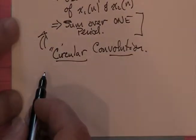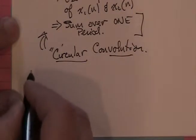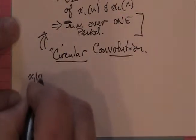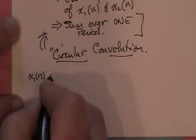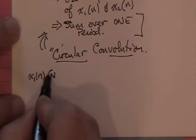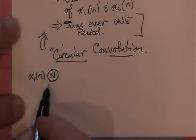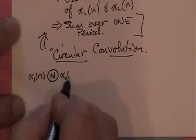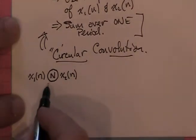Let me rewrite the formula here and just show you the notation. I'm going to say x1 of n, and I'm going to use a new symbol for convolution in block-size manner — I'll draw a little circle around n to indicate circular convolution. It's not really standard notation, but it's the notation your book uses, and it's as good as any other notation that's used.